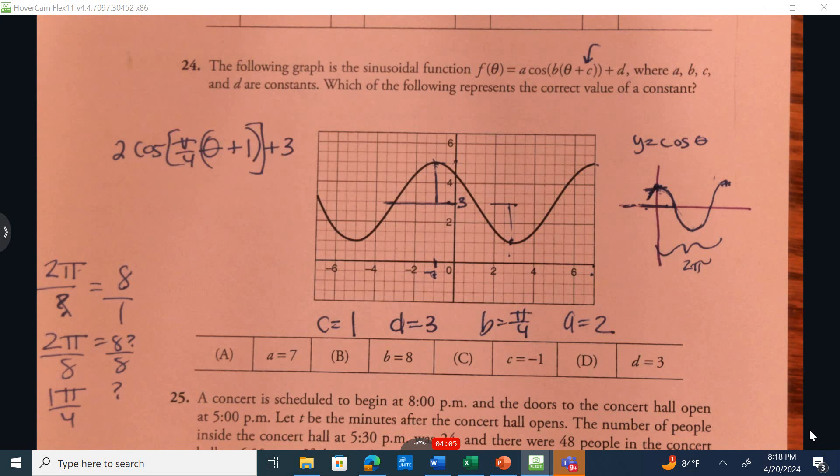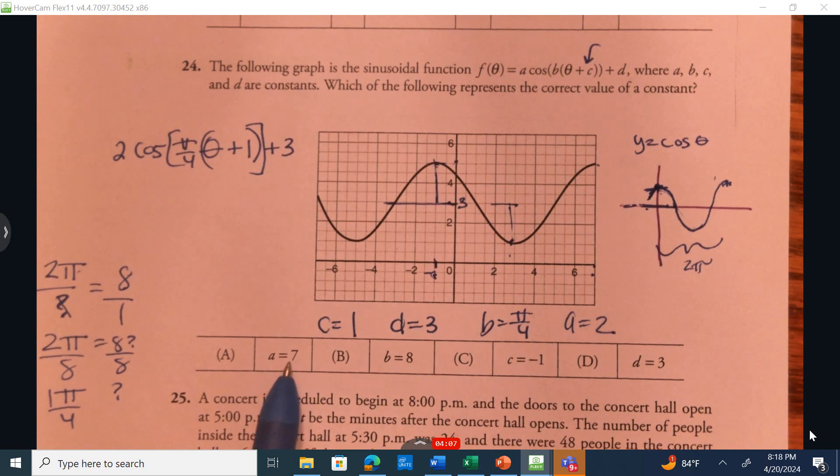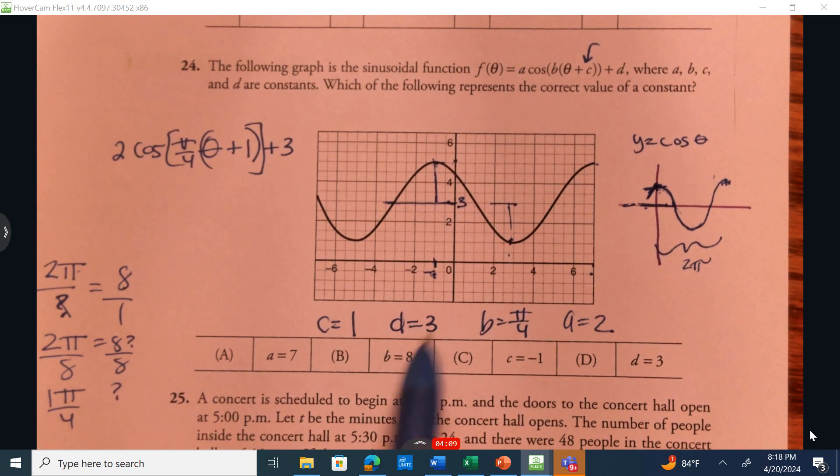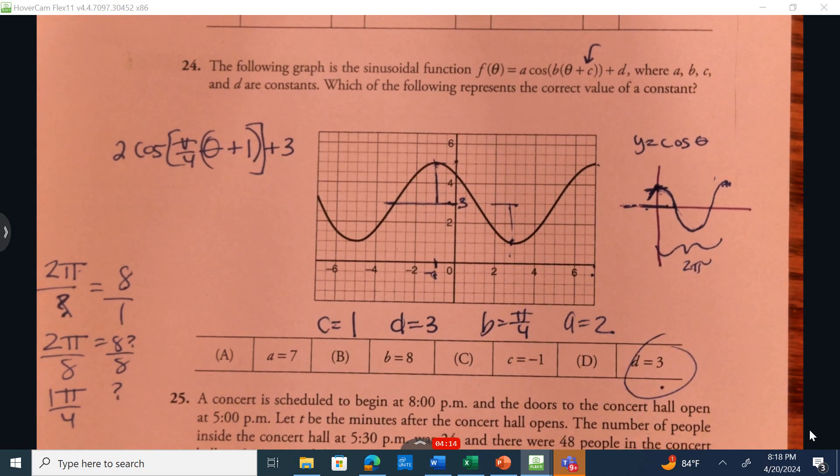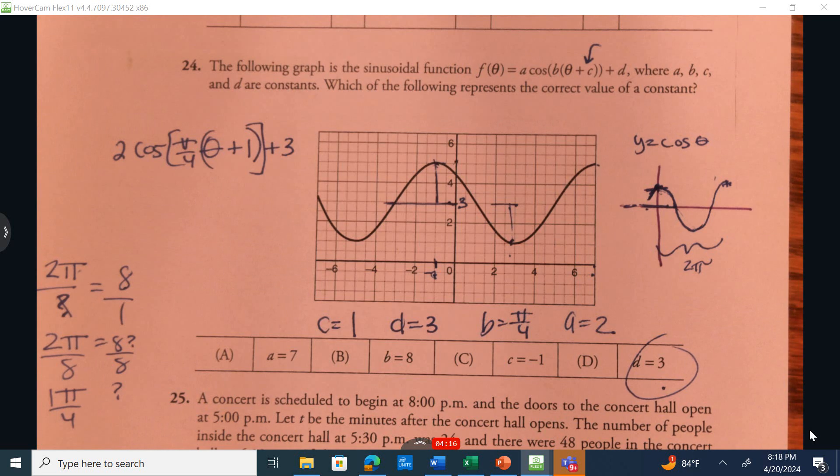Now it says, which of the following represents a correct value for a constant? So is 1 represented? No. Is 3 represented? Yes. Is pi over 4 represented? No. Is 2 represented? No. Correct answer is D. So first we had to figure out what is a, b, c, or d, and then select one of them. Only one of them was going to be mentioned below.